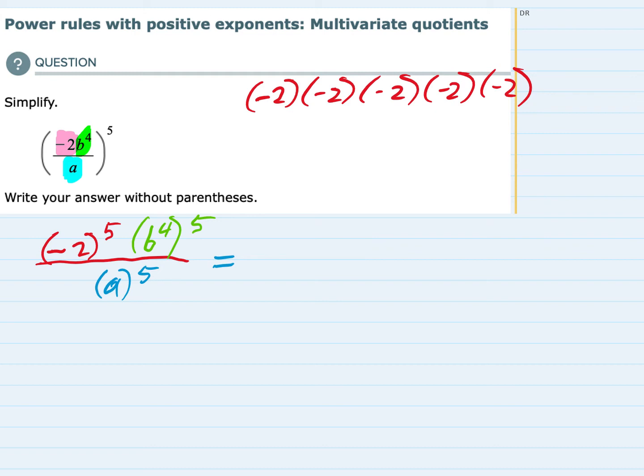Since there's an odd number of negatives my answer will be negative. And 2 times 2 is 4 times 2 is 8 times 2 is 16 times 2 is 32. So that part simplifies to negative 32.